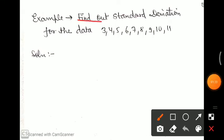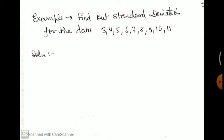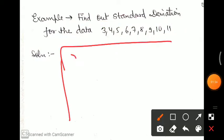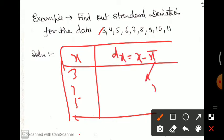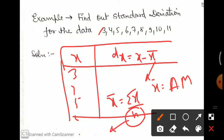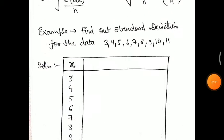The question is: find out the standard deviation for the given data. This format is known as individual series. We make a table with x values: 3, 4, 5, 6, and so on. Then we find dx, which means x minus x̄, where x̄ is the arithmetic mean — summation x upon n. The total number of values is 9, so n equals 9.